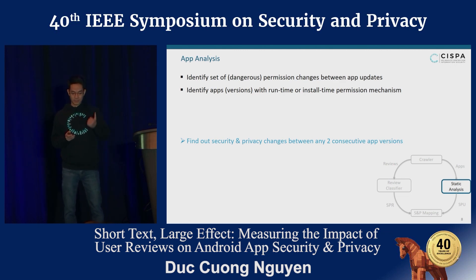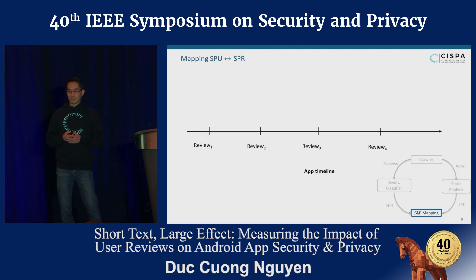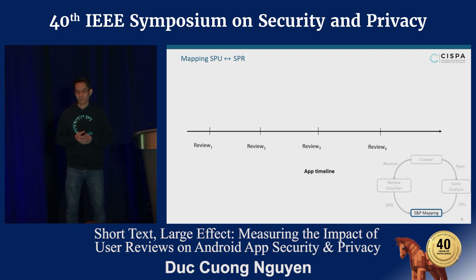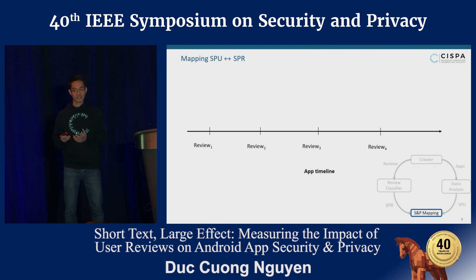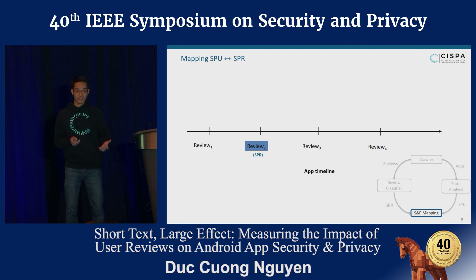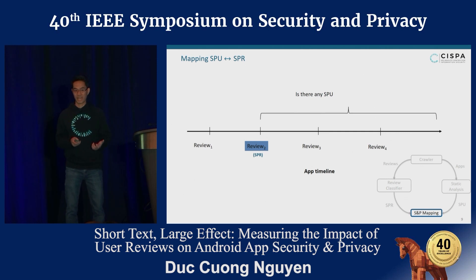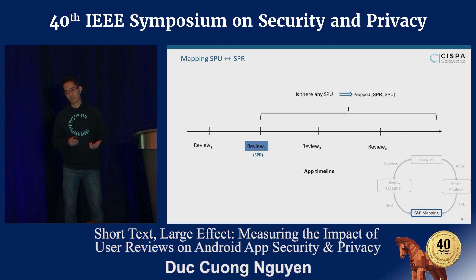The final step in our approach is to map SPU (security and privacy-related updates) to SPR (security and privacy-related reviews). Assuming we have an app and its timeline with four reviews, if our classifier detects that a given review is security and privacy-related, we look forward in time to ask: is there an SPU in a later version of the app? If there is, we consider them as mapped. Of course, this is an approximation, and we will discuss that in the paper.